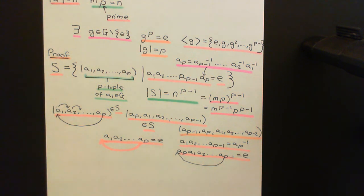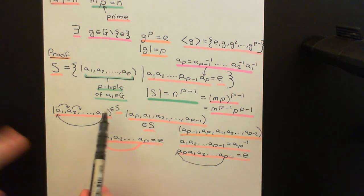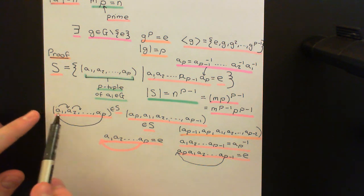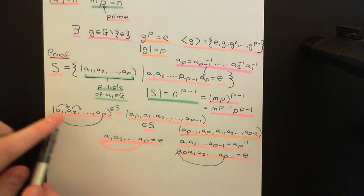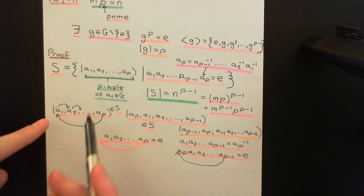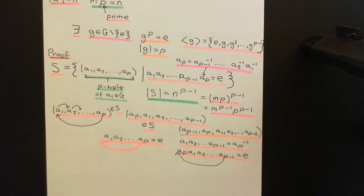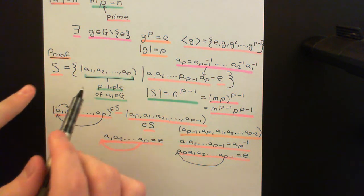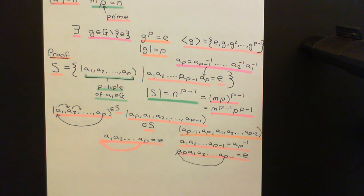In summary: if you have one p-tuple in S, then all of its p cyclic permutations — shifted by 0, 1, 2, ..., p-1 positions — are all also going to be in S.